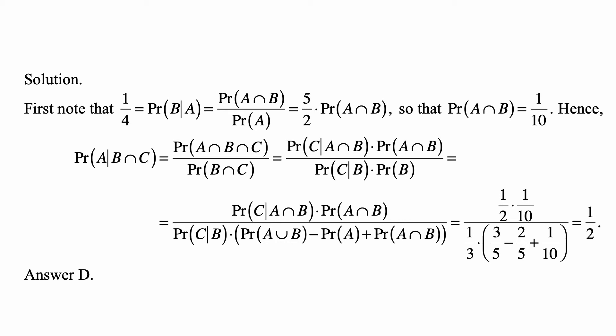This becomes one-half times one-tenth — where one-tenth was just calculated as probability of A intersection B. Plugging everything in, we get one-half times one-tenth divided by one-third times the quantity three-fifths minus two-fifths plus one-tenth. After calculating all that, this becomes one-half. Therefore, the answer is D.